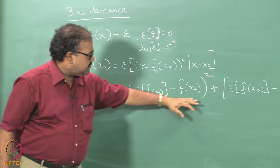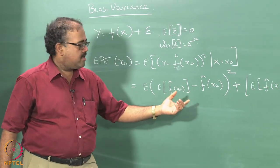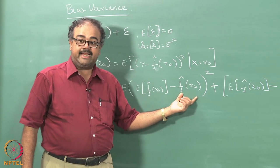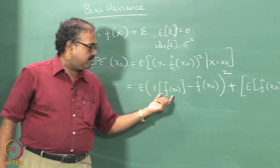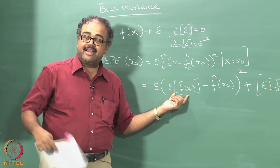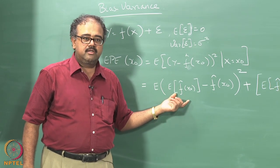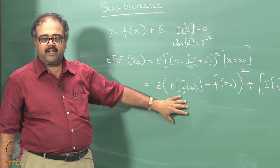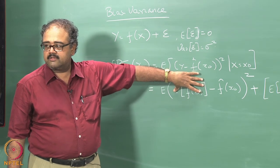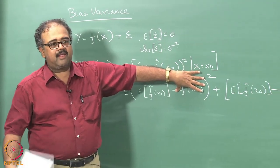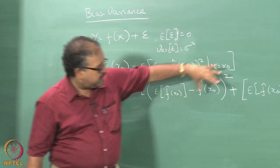The first term is essentially the error that I am going to see by looking at the estimate that I will get from a specific data instance, compared to the estimate I will get as an expectation over the entire training sample from which the training data is being drawn. So if I build the classifier f-hat multiple times, this is the expected output I am going to get for x naught, and this is the output I am getting for this specific instance of data that I have. That is one component of the error.